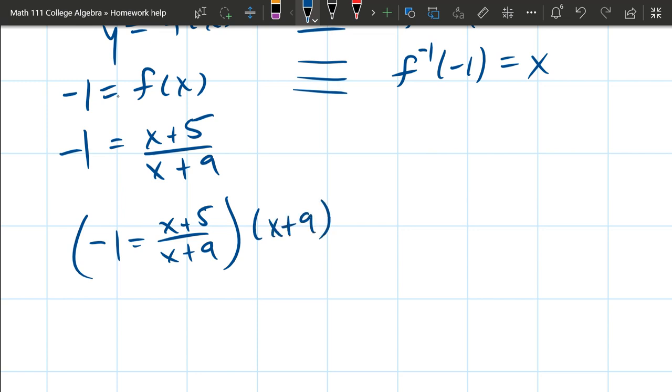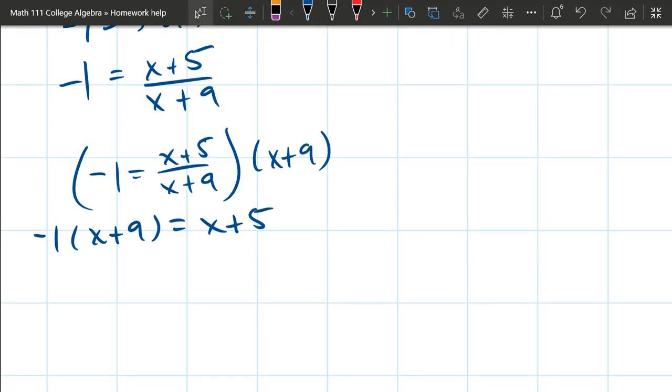We're distributing it to both sides. On the left side, we're going to get -1 times (x+9). The right side is going to cancel the denominator—that was the entire reason we did this—and you're just left with x+5. Distribute -1.